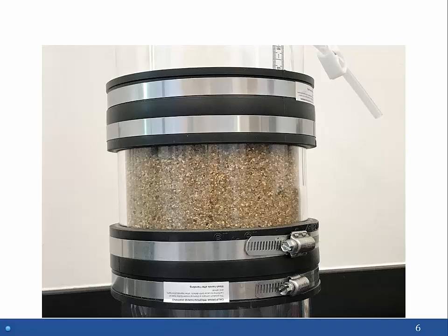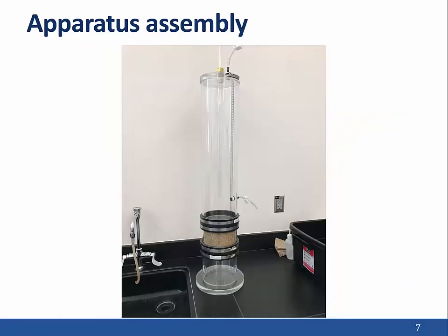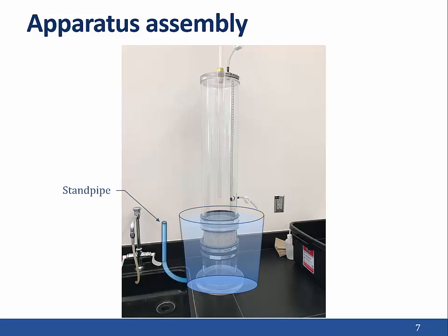This image shows a close-up of the soil specimen in the test section with the Mariette bottle connected above and the drain section connected below. When the entire apparatus is assembled, it is placed in a bucket to saturate the sample. The bucket has a standpipe attached, which controls the elevation of the water in the bucket, thereby creating a fixed elevation for the lower reservoir.